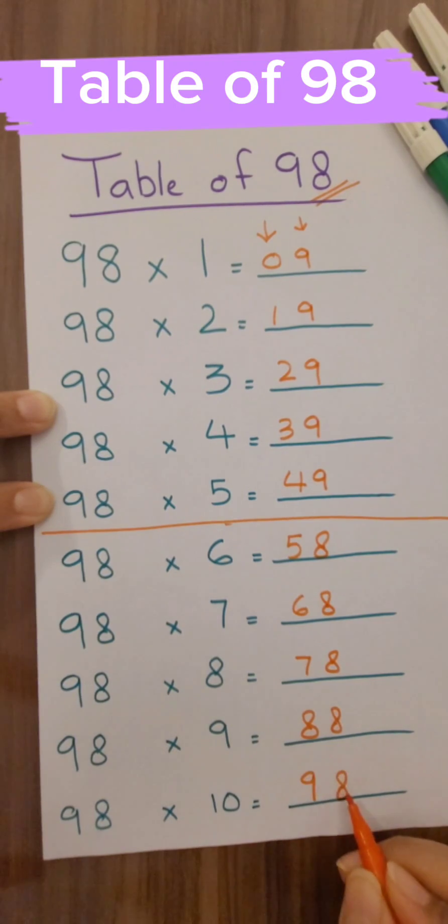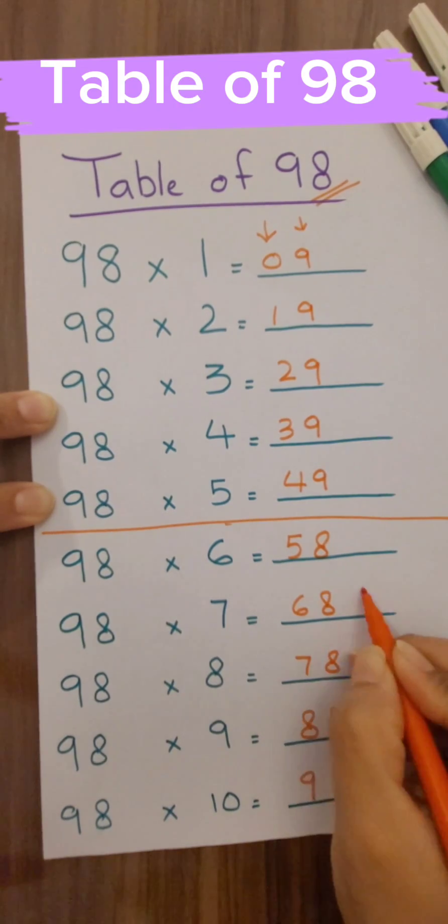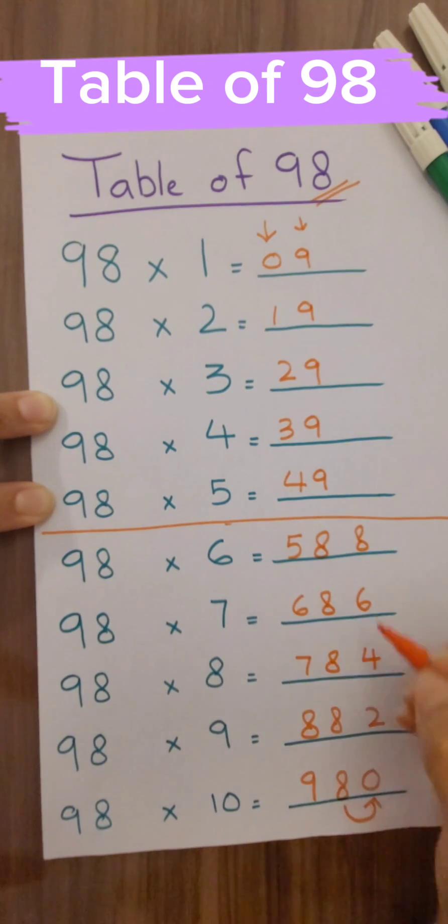Now start from here. You have to write the skip counting of 2: 0, 2, 4, 6, 8, 0, 2, 4, 6, 8.